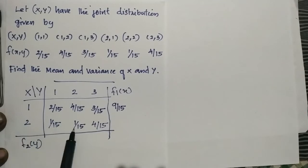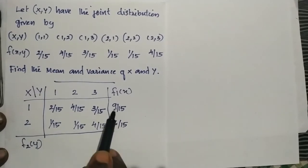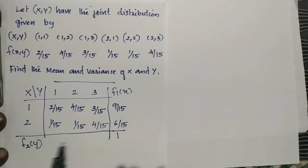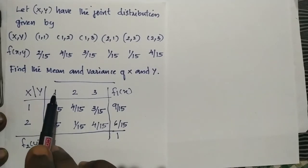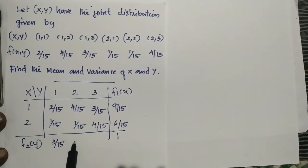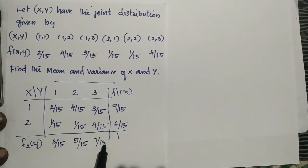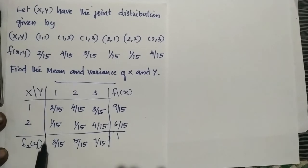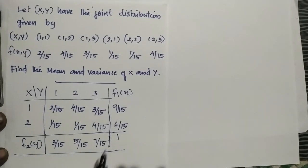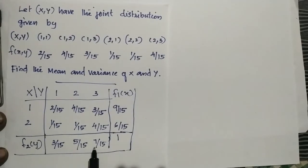F1 of 2 is 6 by 15. The total is 1 by 15. F2 of 1 is 3 by 15. F2 of 2 is 5 by 15. F2 of 3 is 7 by 15. F1 of 1 total is 1 by 15.